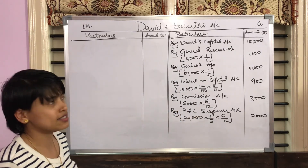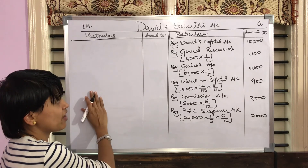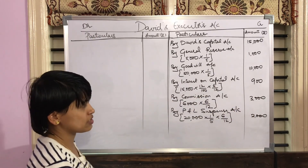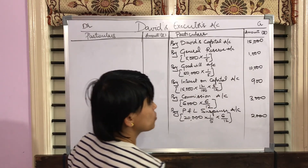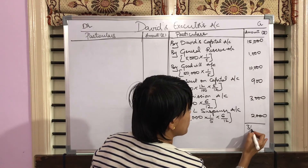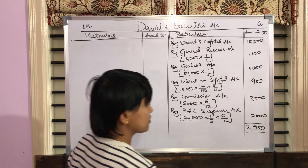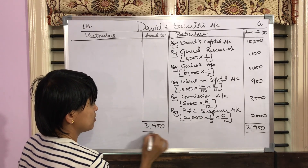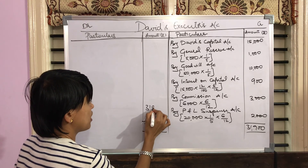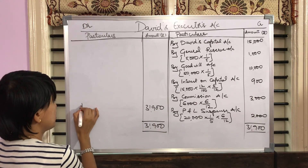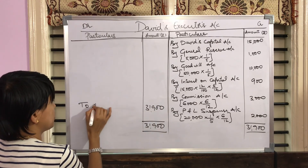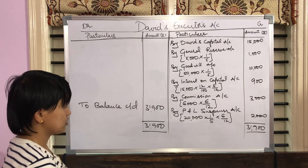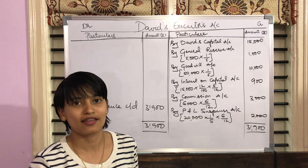Let's do the balancing. On the debit side we do not have any postings. The credit side postings — if you do the total you will get an amount of Rs. 31,900. Write the same amount on the debit side. The balance amount is being carried down. That's it for the solution, students. Thank you.